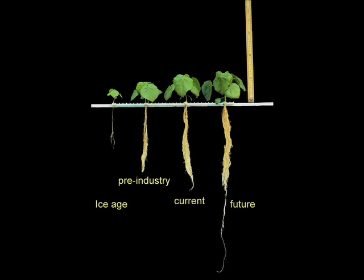For example, here you can see plants of the same age grown across a range of carbon dioxide treatments, ranging from the Ice Age value where this plant is very tiny, all the way through modern times and into the future, shown here with the largest plant.